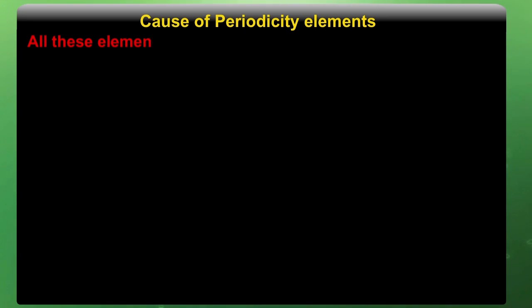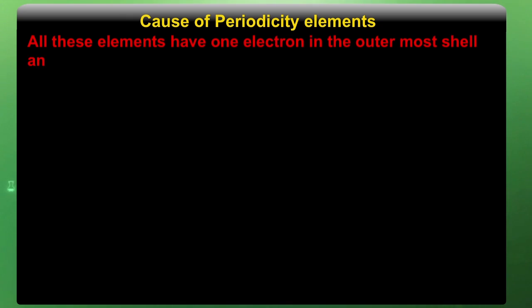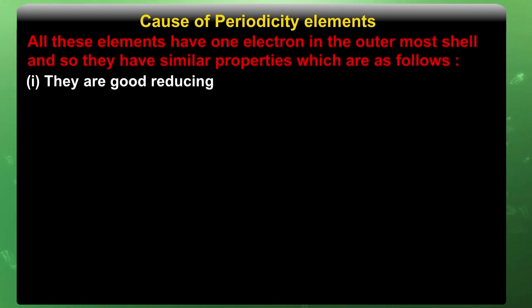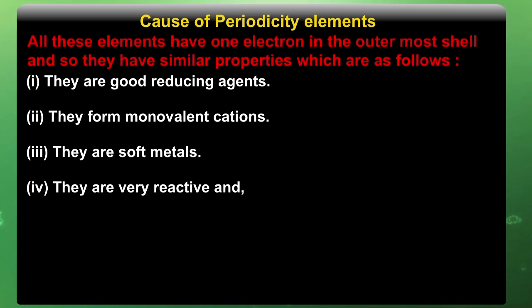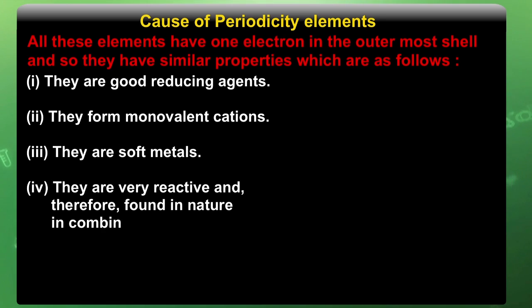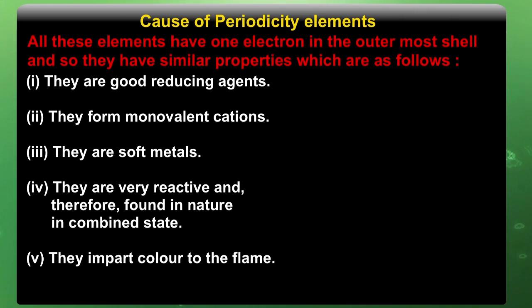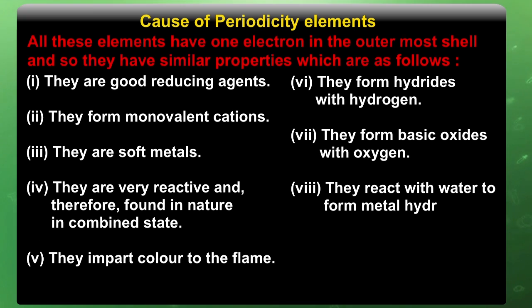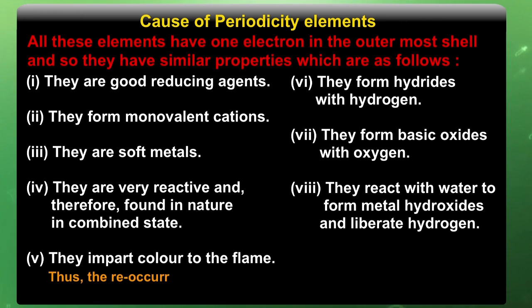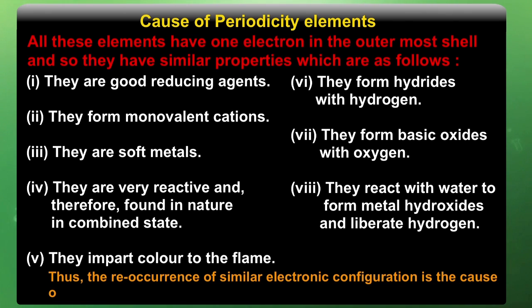Let us understand what is the cause of periodicity of elements. All these elements have one electron in the outermost shell and so they have similar properties which are as follows: they are good reducing agents, they form monovalent cations, they are soft metals, they are very reactive and therefore found in nature in combined state. They impart color in the flame, they form hydrides with hydrogen, they form basic oxides with oxygen, and they react with water to form metal hydroxide and liberate hydrogen. Thus, the co-occurrence of similar electronic configuration is the cause of periodicity in properties of elements.